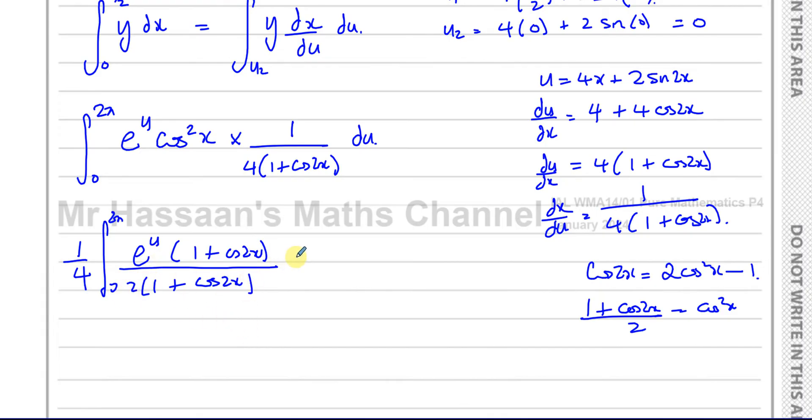Now what's going to happen is this cancels out. I've taken the 2 out here. We'll end up with 1 over 8 between 0 and 2 pi, the integral of e to the power of u with respect to u. How do you integrate e to the power of u? Well it stays the same. So this is going to be equal to 1 over 8 times e to the power of u between the limits of 2 pi and 0. It doesn't change when you integrate e to power something.